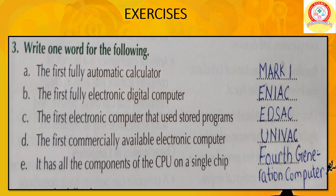Write one word for the following. A: The first fully automatic calculator is Mark 1. B: The first fully electronic digital computer is ENIAC. C: The first electronic computer that used stored programs is EDSAC. D: The first commercially available electronic computer is UNIVAC. E: It has all the components of the computer on a single chip — fourth generation computer.